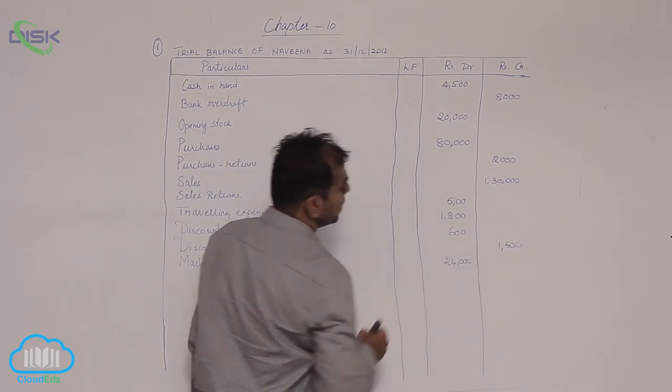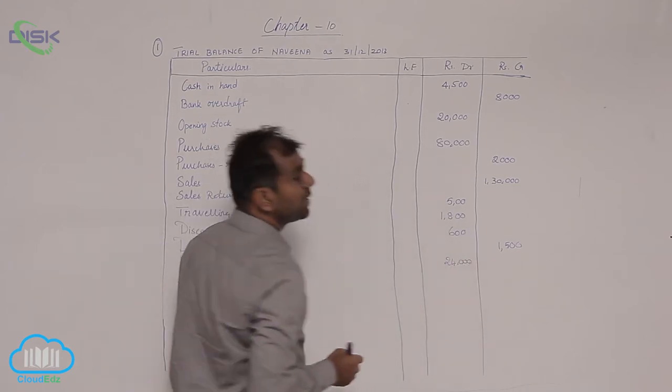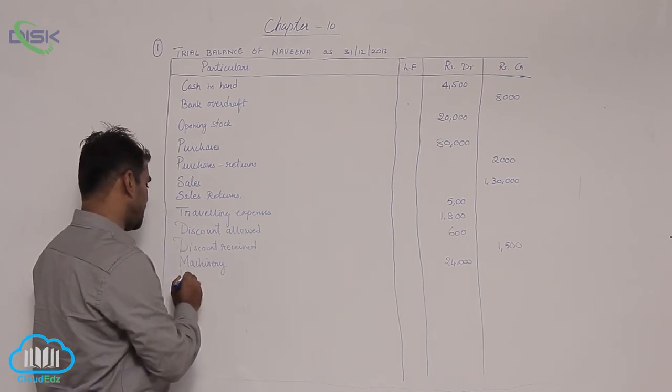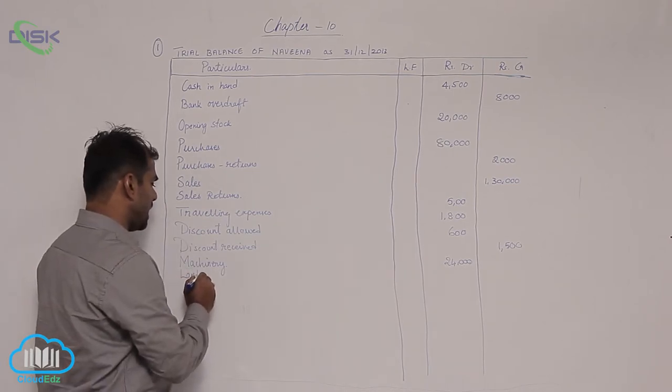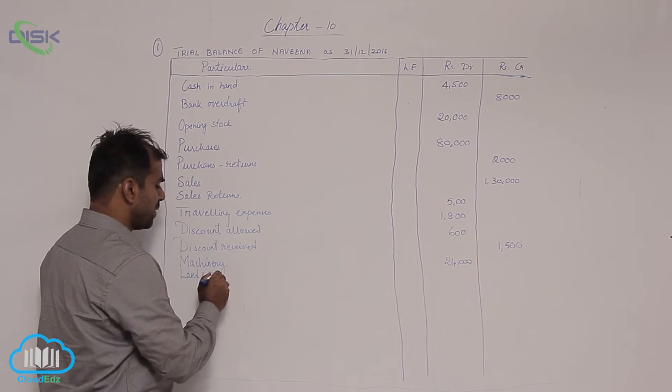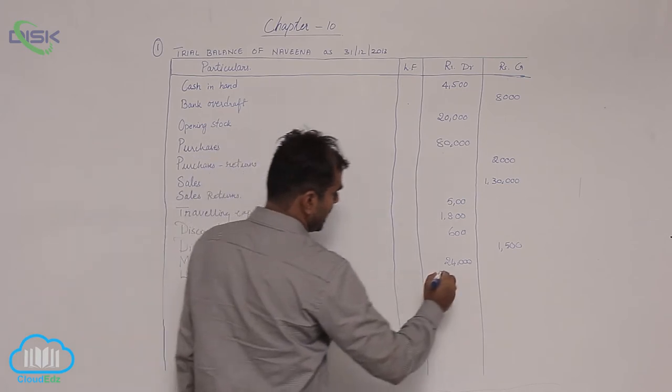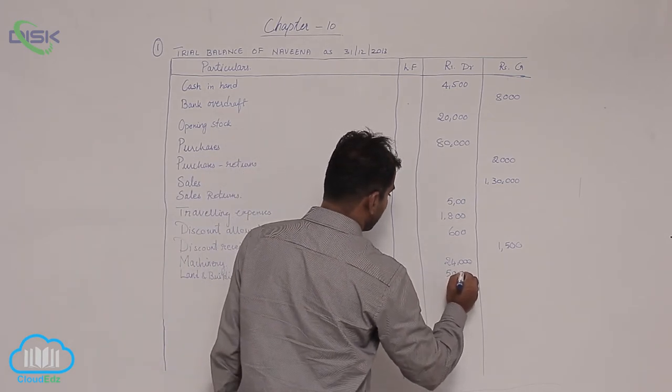Next you have after machinery, land and buildings 50,000. So that is also an asset. So we say land and buildings, we have how much? 50,000. So debit balance 50,000.